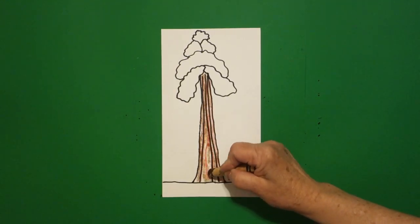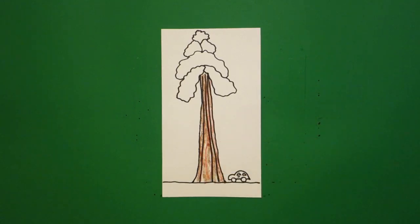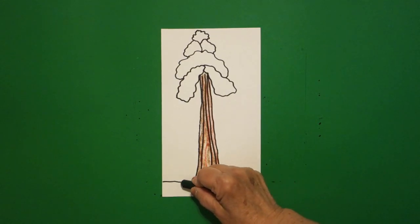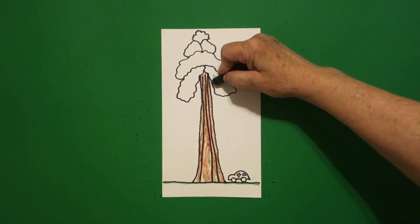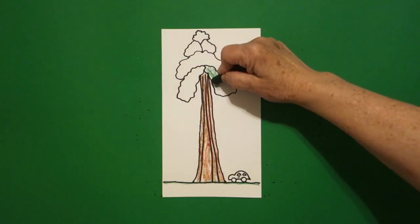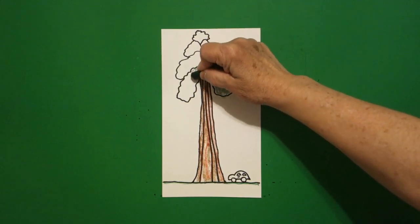Once I've done that, I'm going to take green. And the first thing I'm going to do is I'm going to draw a line right underneath my black line. And now I'm going to come up and I'm going to do each section of my redwood tree.